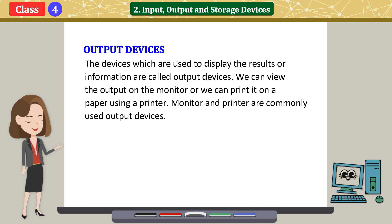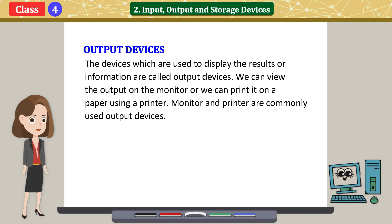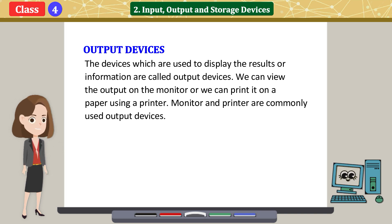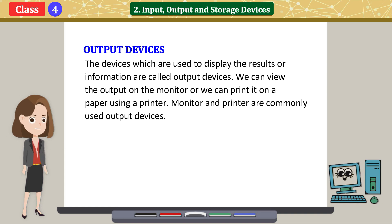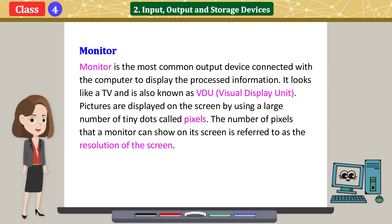The devices which are used to display the results or information are called output devices. We can view the output on the monitor or we can print it on paper using a printer. Monitor and printer are the most commonly used output devices.